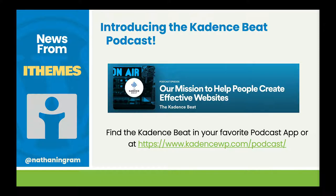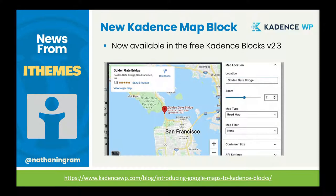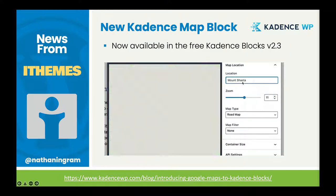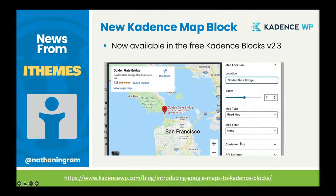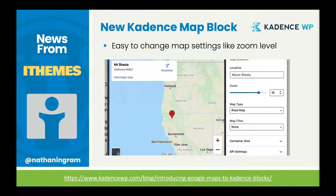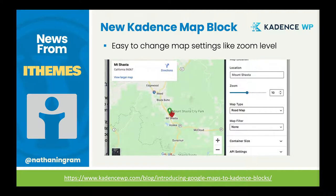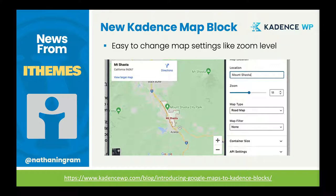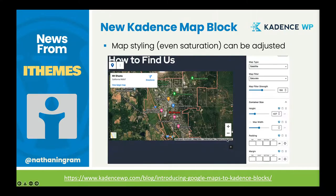Big news from Cadence: the Cadence map block is now available in the free version of Cadence Blocks version 2.3. This block brings in a Google Map — you can simply type in your location and it updates the view. There's a UI to change settings like zoom level right there in the block, and styling options like changing the map type from road to satellite, applying a saturation filter, and changing height and width. Note that this is Google Maps; it does not support open maps.